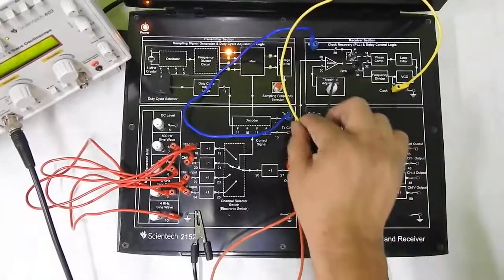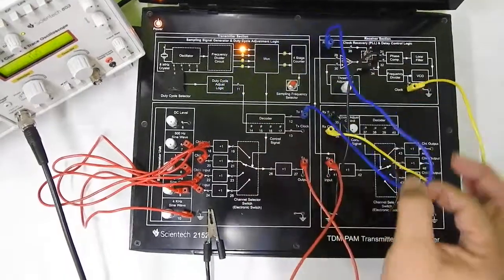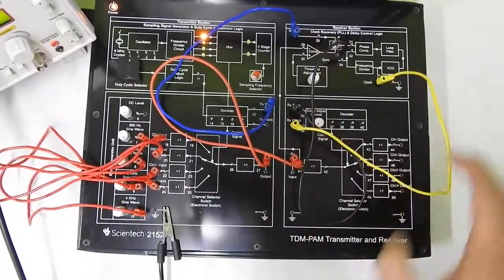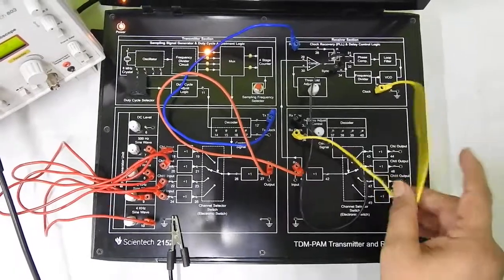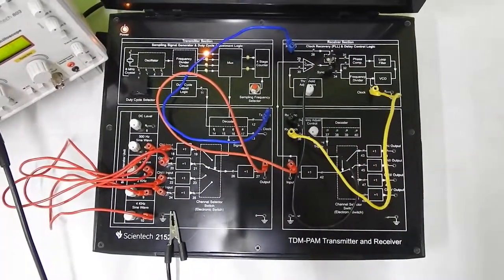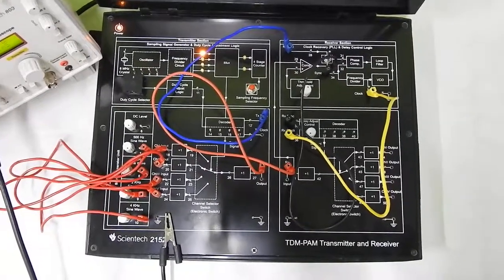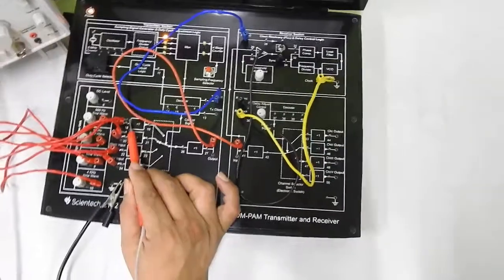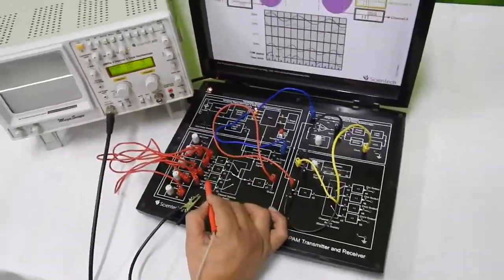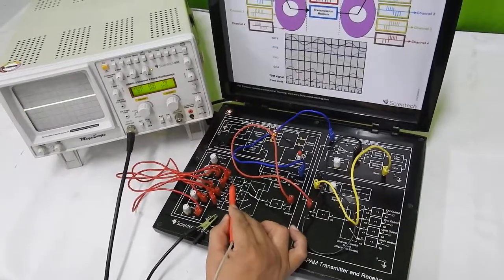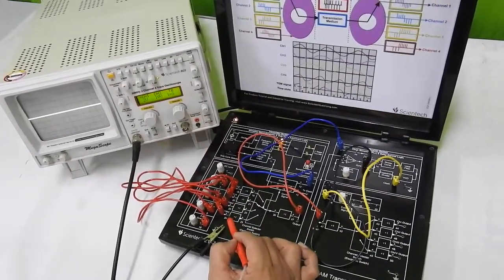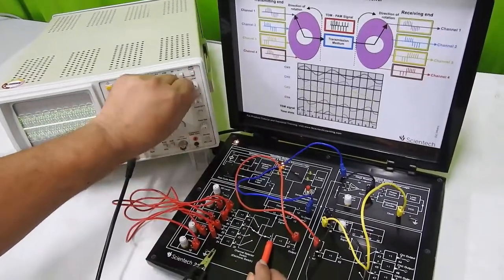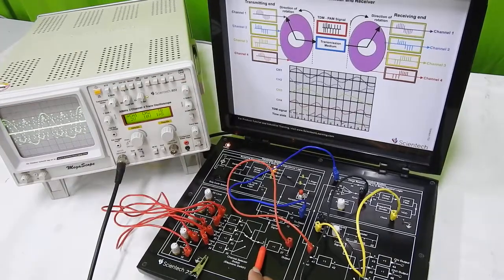So now there are only two connections — two wires: we are sending the sync and the data. The receiver has become more complex compared to the first experiment, as a PLL is now in the loop multiplying the sync frequency by four and deriving the clock from the sync pulse. These are the four channel signals: channel 1 (500 Hz), channel 2 (1 kHz), channel 3 (2 kHz), and channel 4 (4 kHz). This is the multiplexed signal, multiplexed by the sampler switch.